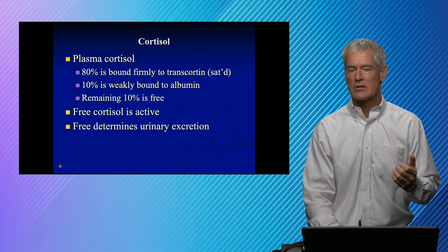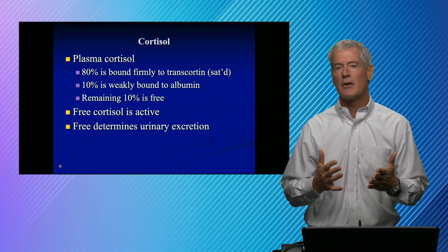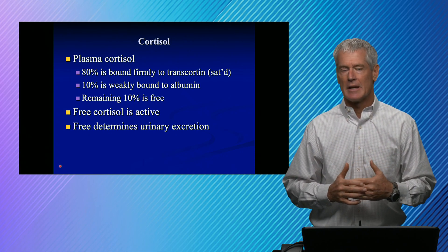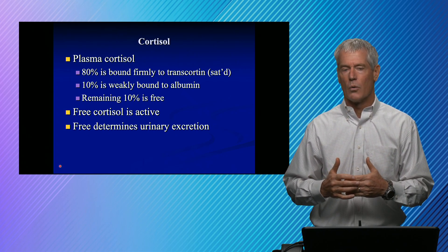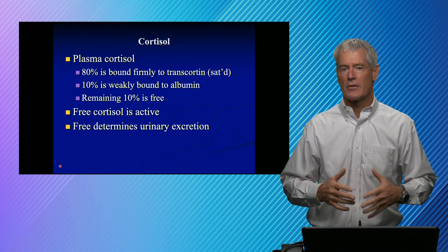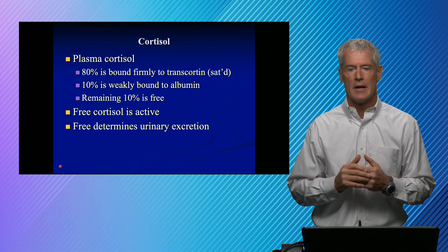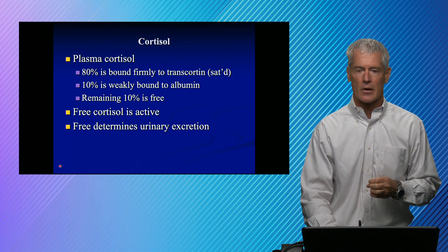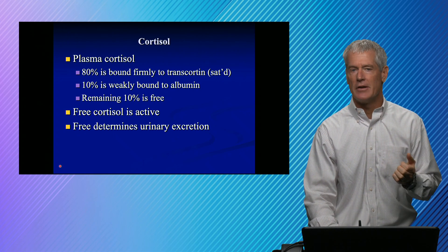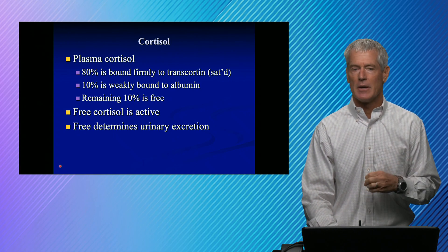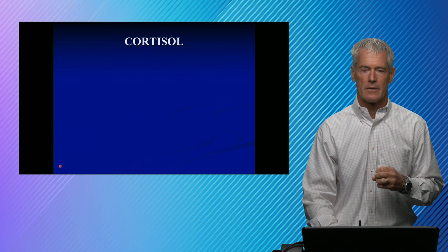If cortisol is bound to a globulin, it's too big to get through the glomerulus. So really the only part that gets excreted is the free cortisol. Urinary cortisol is therefore a good test because it's actually an indication of free cortisol.